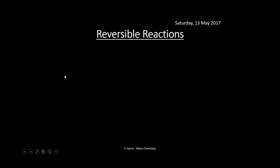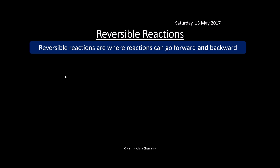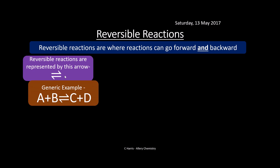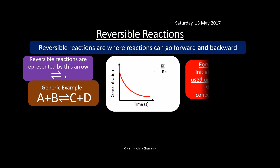Let's have a look at reversible reactions. Reversible reactions are where reactions go forwards and backwards, and they're represented by a harpoon arrow — one going one way, one going the other. Here's a generic example: A and B is in equilibrium with C and D.